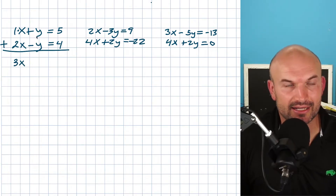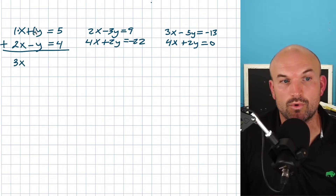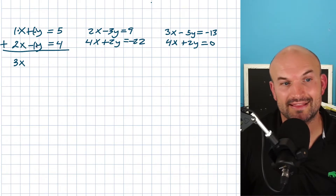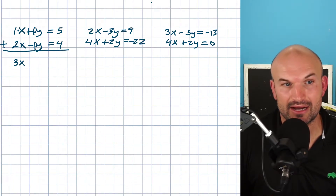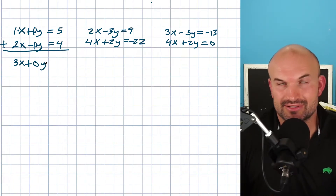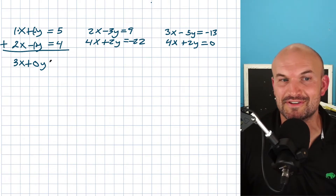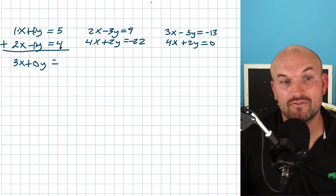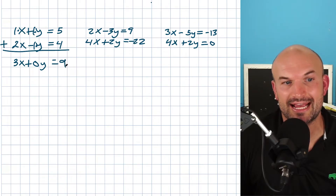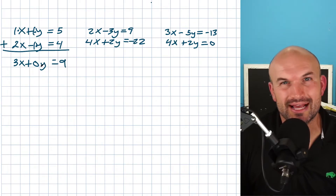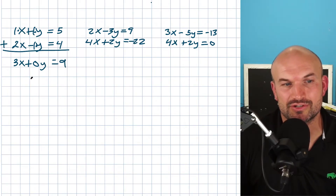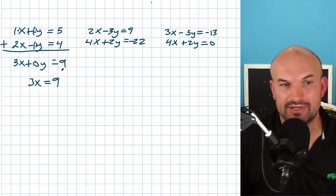In this case, remember there is a one in front of this Y. So that's a 1 times Y and a negative 1 times Y. Therefore when I add these up together, I'm going to get a zero Y. Remember, zero times anything is just going to be zero — but for accounting purposes on this first example, we'll write it there. Then I'm going to have 5 plus 4, which is going to be 9. Three X plus zero is just going to be 3X, so I have 3X equals 9.